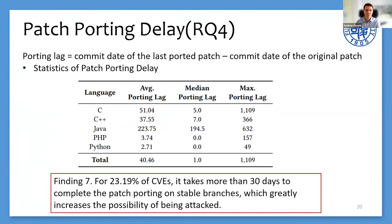Finally, we conduct a study to understand the patch-porting process across stable branches. We calculate the patch-porting delay as the delta between the commit date of the first patch and that of the last ported patch. The figure presents patch-porting delays for vulnerabilities in different languages. Patch porting takes fewer than 4 days for PHP and Python, while more than 37 days for C and C++. Python and PHP developers take a more proactive attitude toward patching vulnerabilities. However, for 23% of CVEs, it takes more than 30 days to complete patch porting on stable branches, greatly increasing the possibility of being attacked.